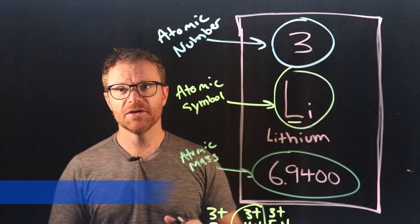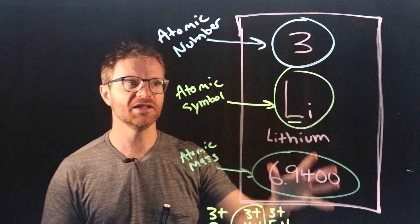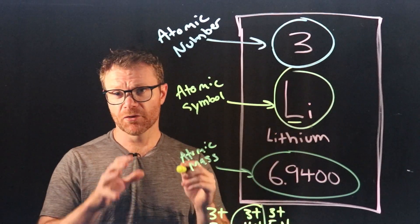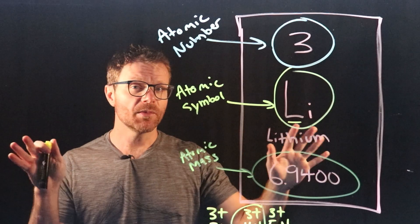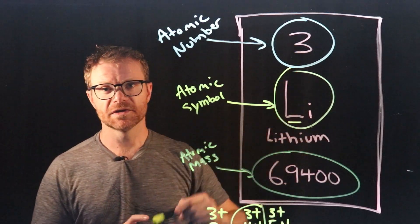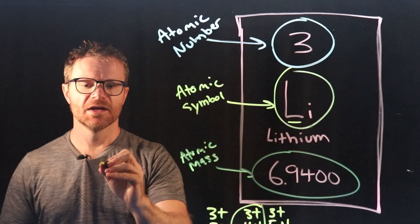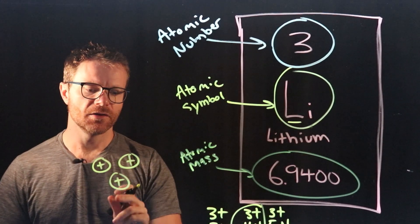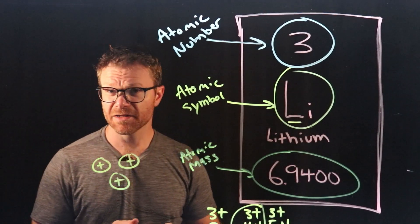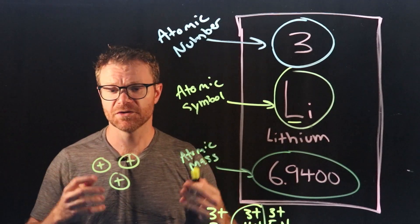So if we're thinking of a lithium atom based on the information I see here, how many protons are in the nucleus? Well the atomic number is three and the atomic number is always the number of protons. So that means there's three protons in the nucleus.